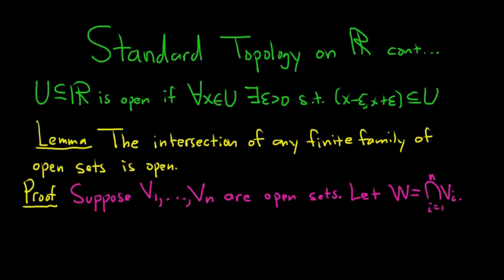So to show W is open, we have to take an x in W and show there is an epsilon neighborhood about x entirely contained in W. So our claim is W is open. And so we'll start by taking an x. So take any x in W. So the natural thing to do now is write down what it means to be in W. So if x is in W, x is in this intersection. If it's in the intersection, that means it's in each of these V sub i's.